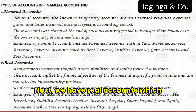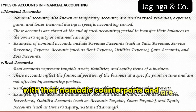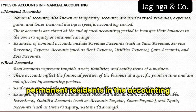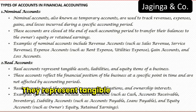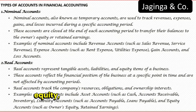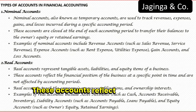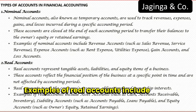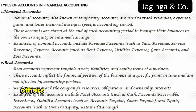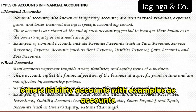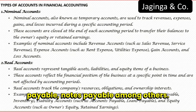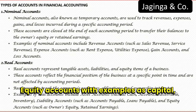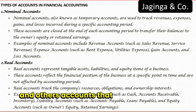Next, we have real accounts, which contrast with their nomadic counterparts and are like permanent residents in the accounting world. They represent tangible assets, liabilities and equity — things that have a physical existence or economic value. These accounts reflect the financial position of a company at a specific point in time. Examples of real accounts include asset accounts such as cash, accounts receivable and equipment; liability accounts such as accounts payable and notes payable; and equity accounts such as capital and retained earnings.